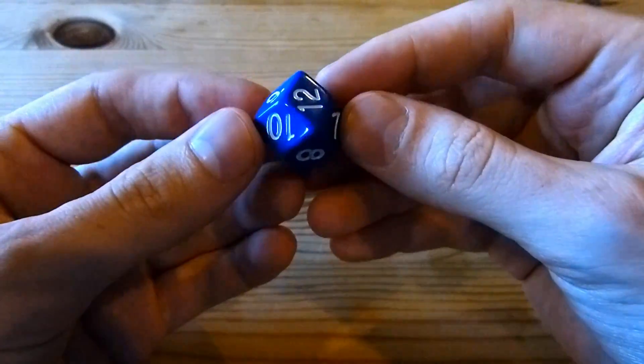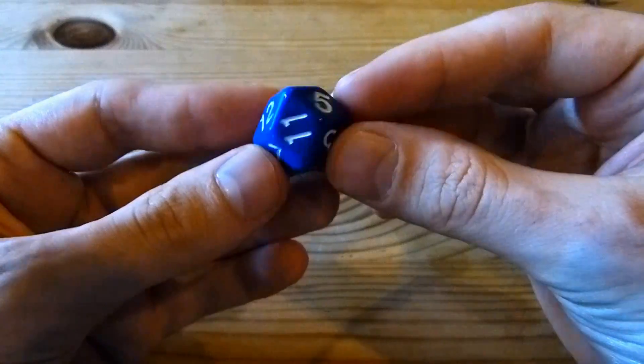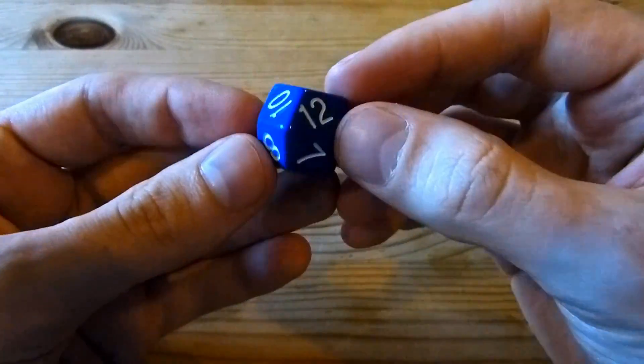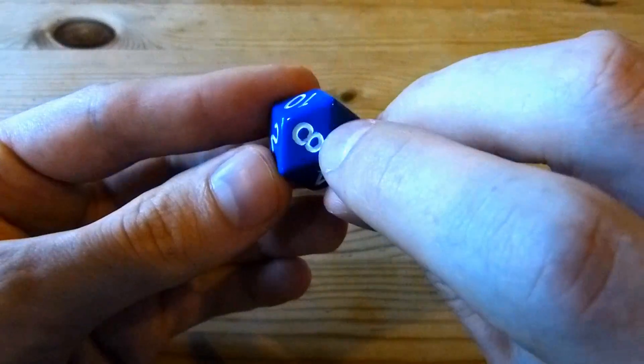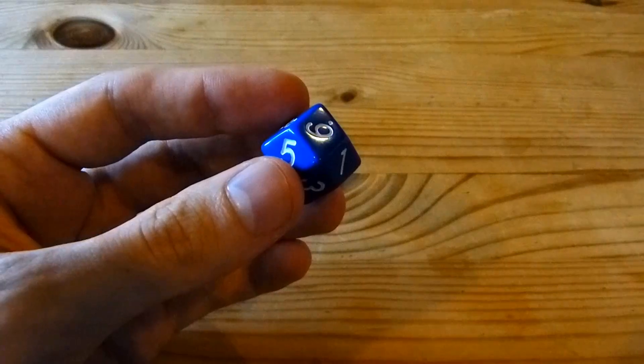It's also isohedral, which means that there's a symmetry of the object that takes any face to any other face. And so this means that it's a fair die, up to differences in how much you remove from each face when drawing the number and so on, any manufacturing defects.